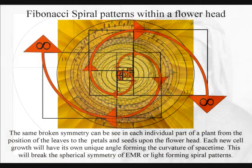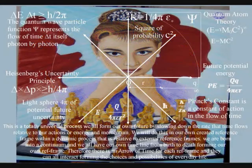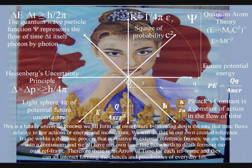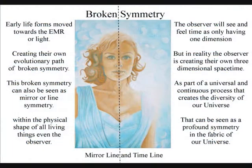Intelligent life will form its own evolutionary path out of this process, relative to its own energy. Because energy, space and time are interlinked by this process, the timeline of the individual life form will be visible as line symmetry within the physical shape of each individual life form.